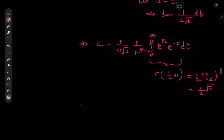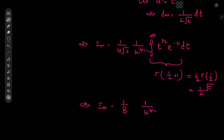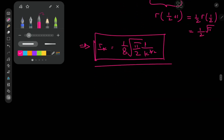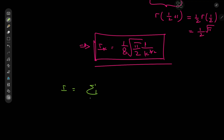So this implies that i sub k equals 1 by 8 times root 2 times 1 by k to the 3 halves times root pi, which I'll write as root pi by 8 root 2, times 1 by k to the 3 halves. Now the target integral required us to take the sum over the positive integers k of negative 1 to the k plus 1 times k times the result of i sub k, which has root pi by 8 root 2 as a constant factor out front.